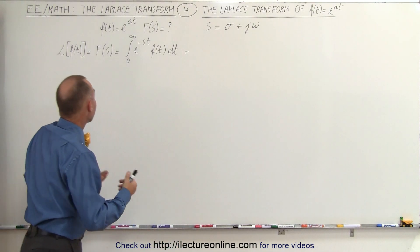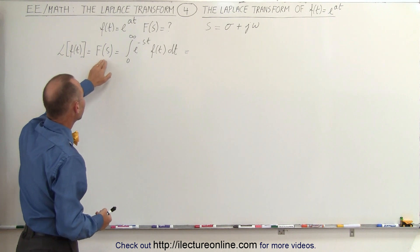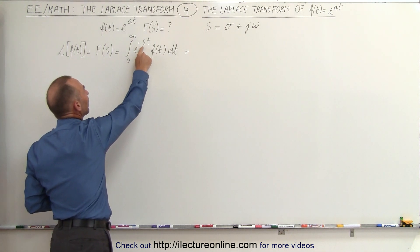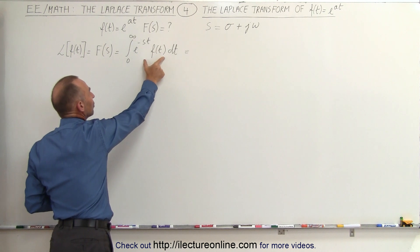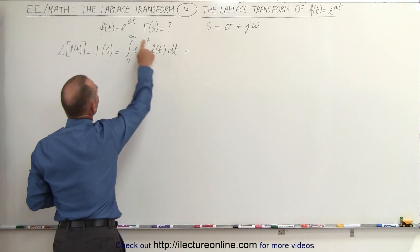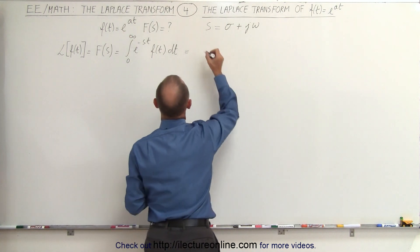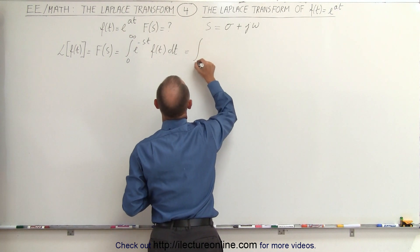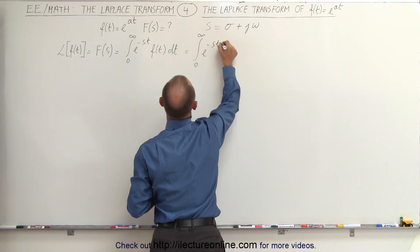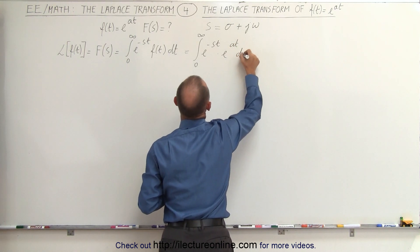So how do we do that? The Laplace transform is equal to the integral from 0 to infinity of e to the minus st times the function of t times dt. So now we're going to replace this by what the function is equal to. This becomes the integral from 0 to infinity of e to the minus st times e to the at times dt.